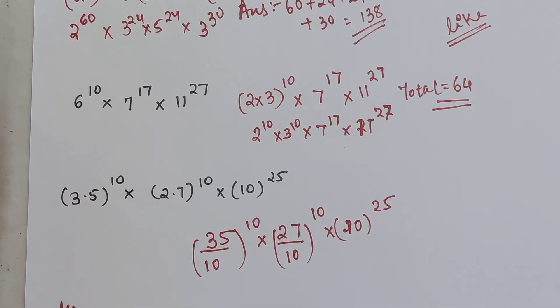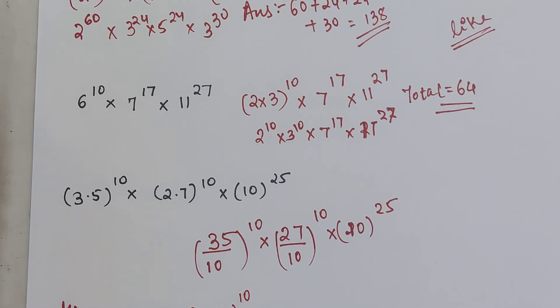So this can be written as 3.5, which is 5 into 7 the whole raised to 10, and this 10...